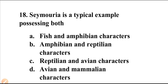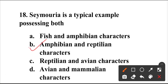Question number eighteen: Seymoria is a typical example possessing both — what characters? Seymoria is an extinct genus of Seymouriamorpha from the early Permian of North America and Europe. It is a typical example which possesses both amphibian and reptilian characters. Option B is the correct answer.